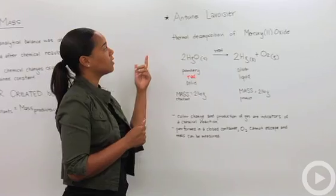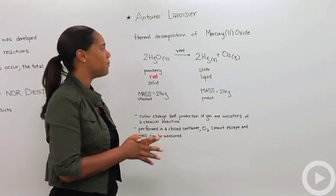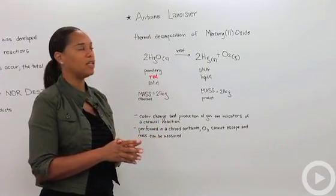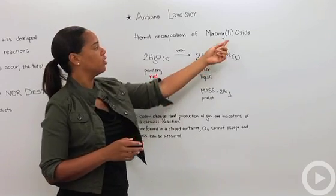There was a scientist back in the 18th century, Antoine Lavoisier, who did the thermal decomposition of mercury(II) oxide.